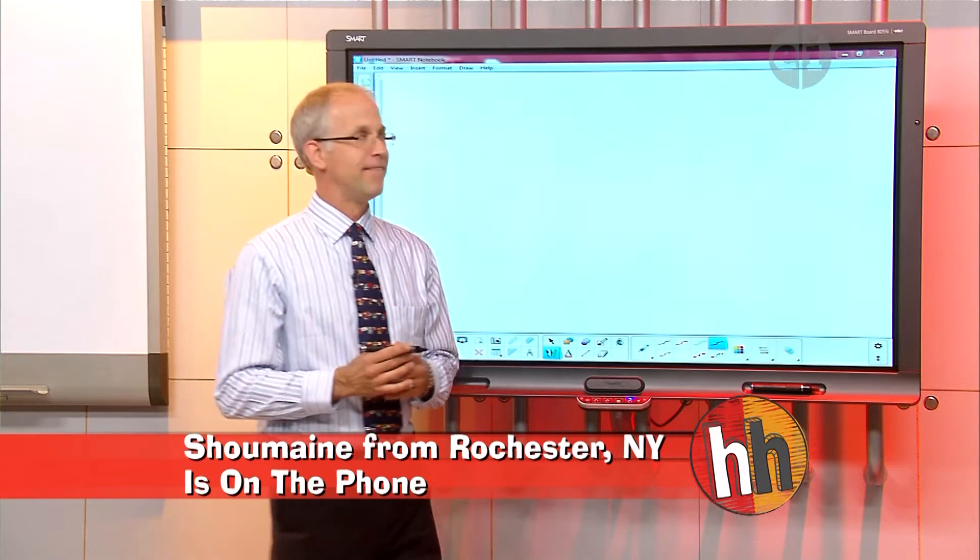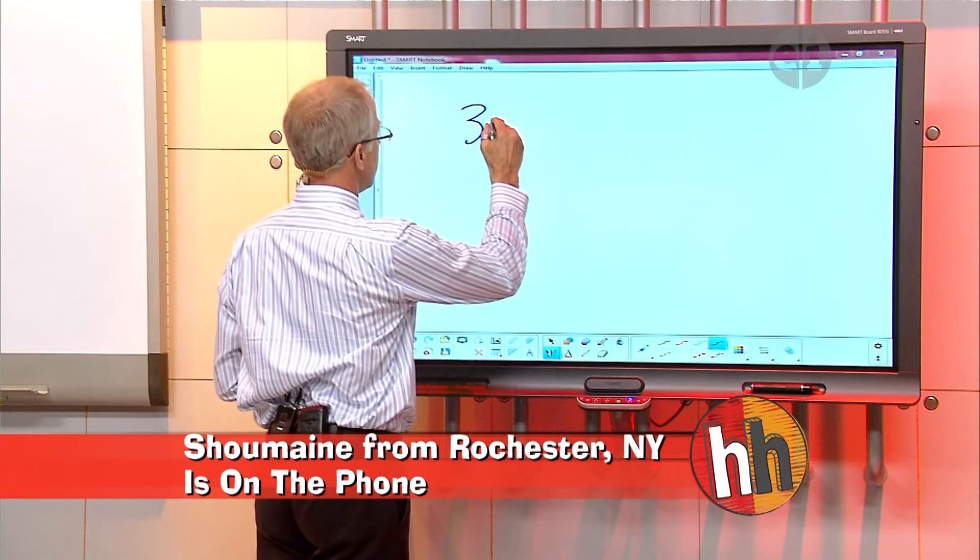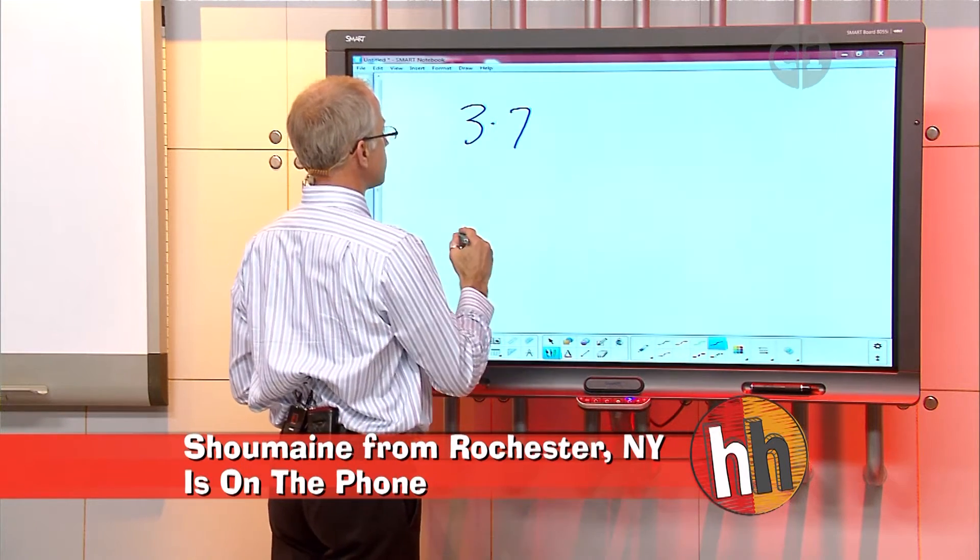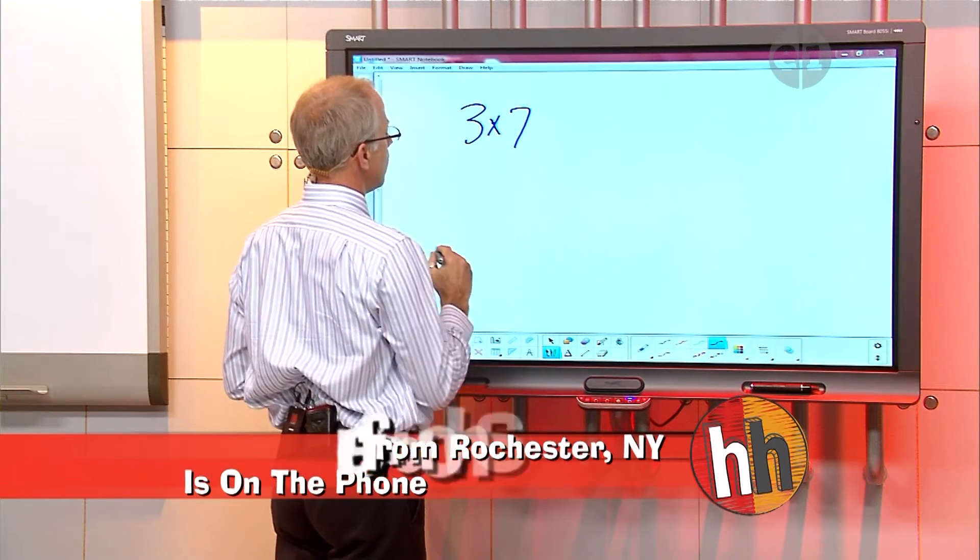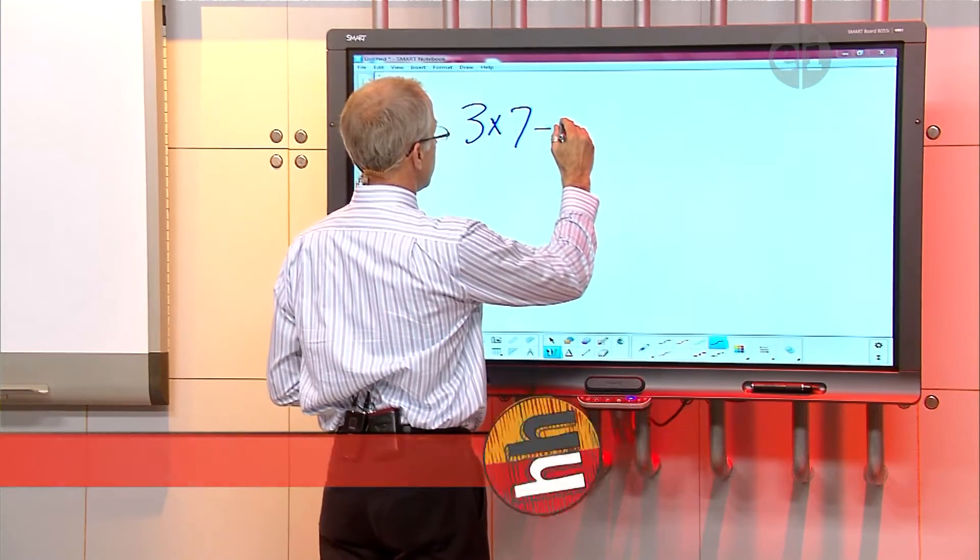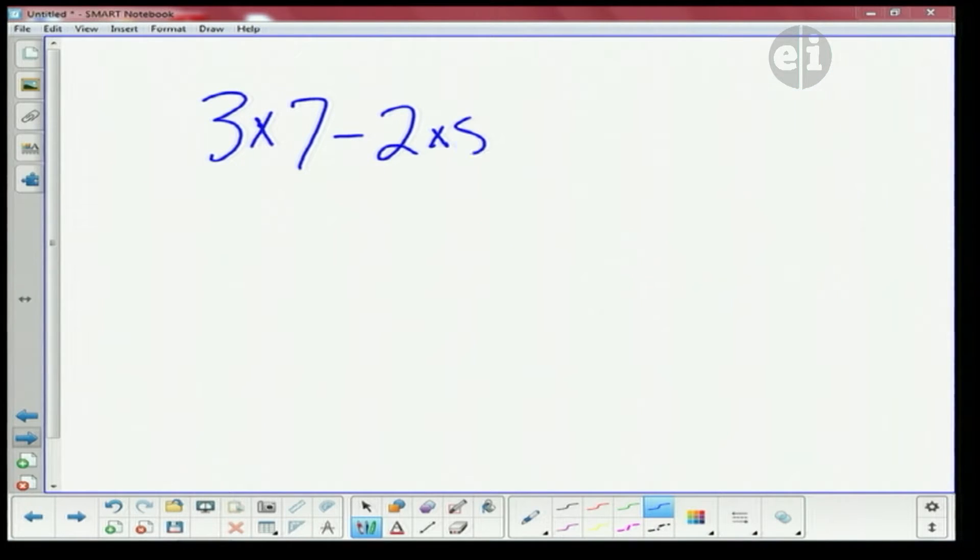It is 3 times 7. 3 times 7. Minus 2 times 5. Minus 3 squared. Minus 3 squared. Plus 17. Plus 17. Divided by 17. Divided by 17. Correct.